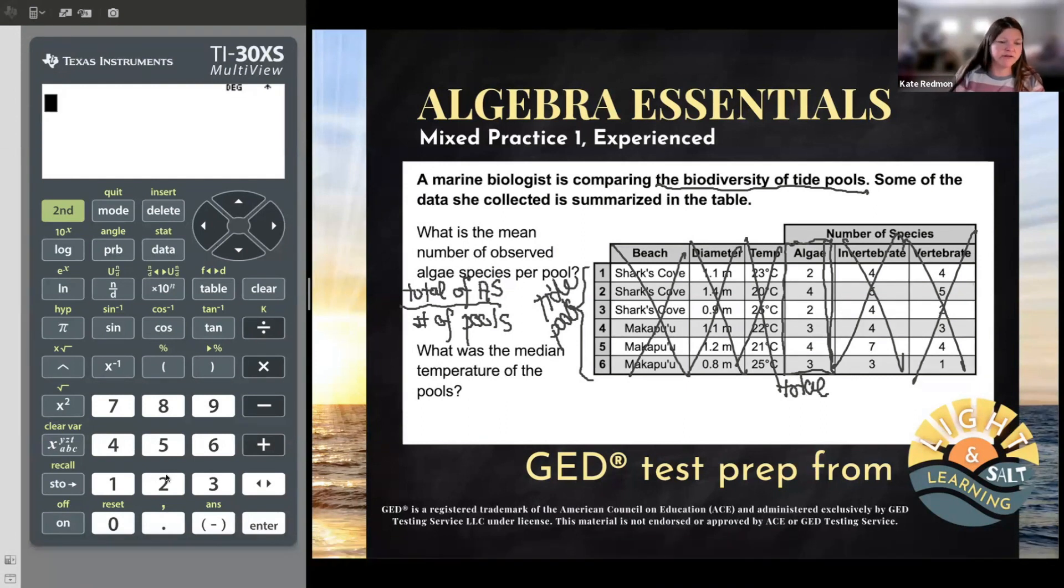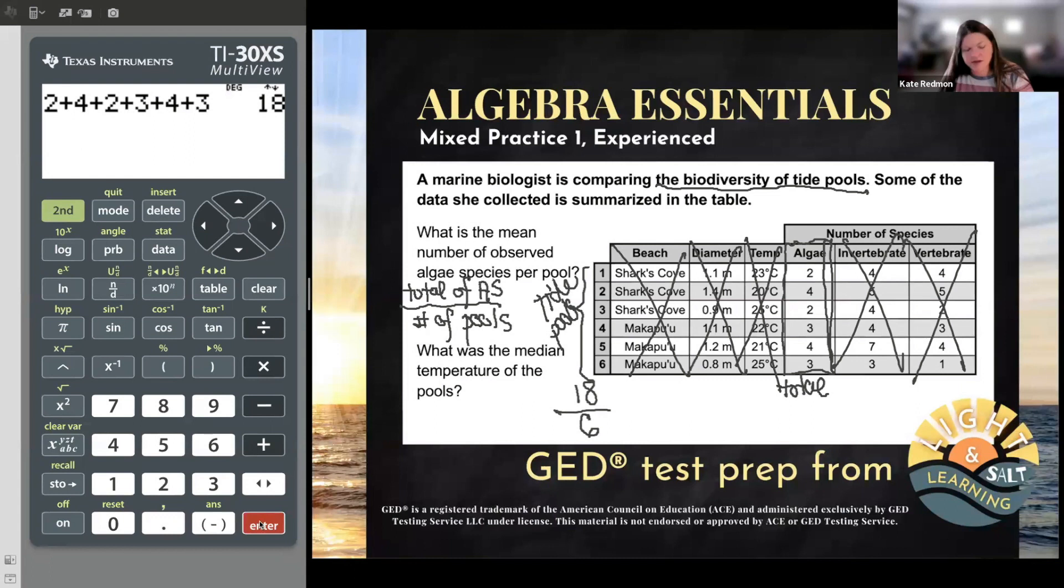Let's do that in our calculator. So easiest way to probably total up these numbers is just to add them. I could multiply where there were repeats, but it's only six numbers. So go ahead and I'll look and see that the total of the algae is 18 species. But those 18 species total are across six pools. So let's divide by those six pools. And then we see we have an average or mean of three algae species per pool. Awesome.